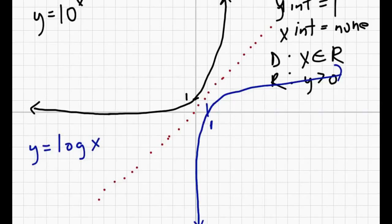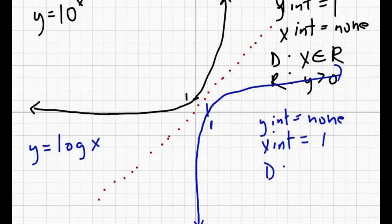So for the log graph, you can see that now there are no y-intercepts, and our x-intercepts, we have one of them, and in this case it's at 1. So you can see it's just the reverse of the exponential one, and our domain and range also get reversed, so our domain will be x is greater than 0 this time, and our range will be y is any real number.